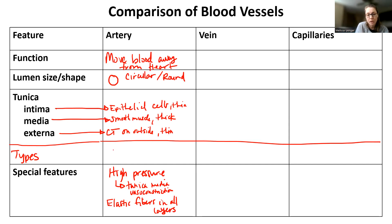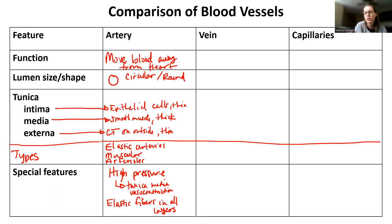For the different types of arteries, there are elastic arteries, muscular arteries, and arterioles — going from big to medium to small. Elastic arteries are things like the aorta and the pulmonary trunk because they're under higher pressure and need more elastic fibers. Muscular arteries are all the named arteries you've learned. Arterioles are the smallest, have the thinnest layer of smooth muscle, and are the artery right before we get to a capillary.